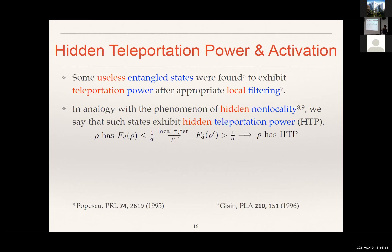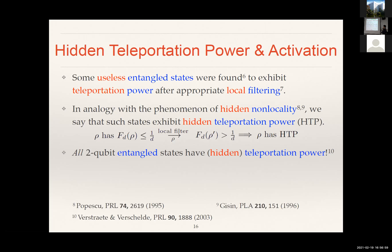So what do we know about quantum states having hidden teleportation power or not? It was shown in 2003 that all two-qubit entangled states are either already useful for teleportation or their teleportation power can be activated. It's also known that bound entangled states have no teleportation power and this teleportation power cannot be activated. And it's known that entangled isotropic states — a well-known family of two-qubit states — if they are entangled, then they are useful for teleportation.